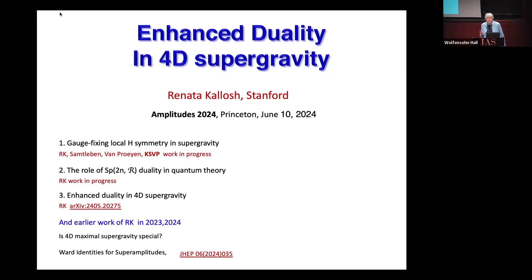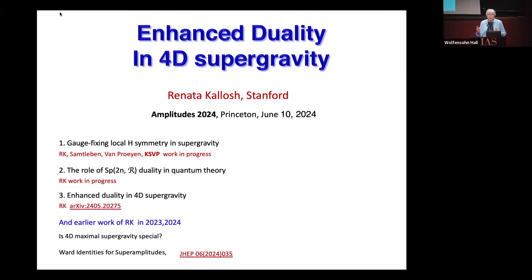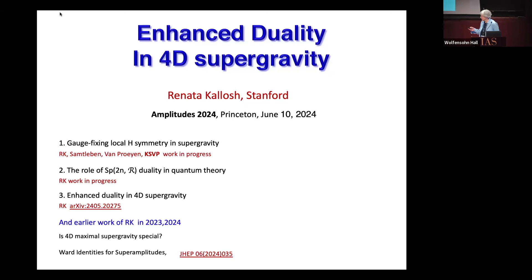Those of you who know the Hamiltonian story know that symplectic symmetry is the Hamiltonian. All the dualities — electromagnetic dualities — always come in doublets. I was trying hard to build the Lagrangian path integral, and I couldn't. But the Hamiltonian just worked perfectly simply because those are symplectic symmetries.